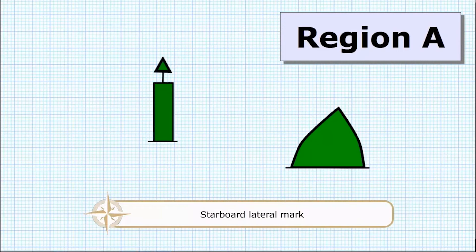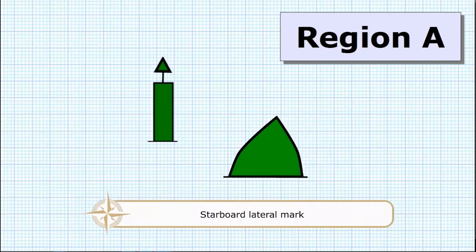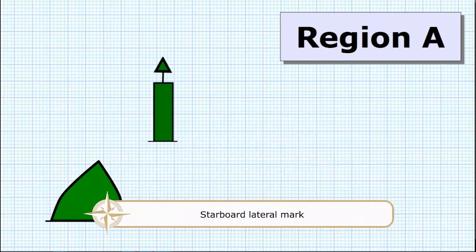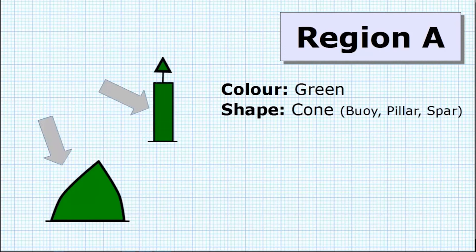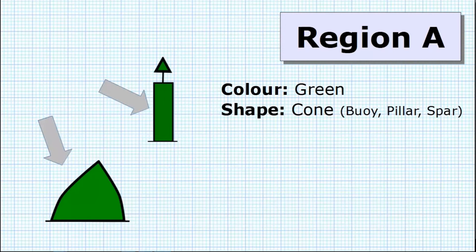Now let's have a look at the starboard lateral marks starting off with Region A again. We're going to complete the same information. The color? Well, it's going to be green. We know that from the picture. Then we're going to look at the main body of the buoy itself. We can see that its shape is going to be a cone shape and this could be a buoy, a pillar or a spar.